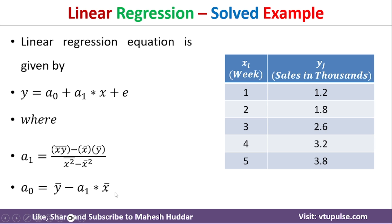Once we calculate a1, we can calculate a0 using: a0 = mean of y minus a1 multiplied by x-bar (mean of x). Since we know the values of x and y, we calculate all these parameters to get a1 and a0. Once we have a1 and a0, we get the linear regression equation, which allows us to predict y given any x.